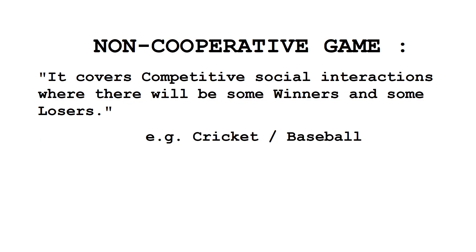There are two types of branches in game theory. One is cooperative and one is non-cooperative. Non-cooperative games are where there will be a competitive social interaction where there will be some winners and some losers — a competitive environment.